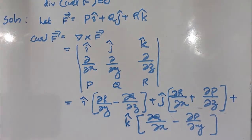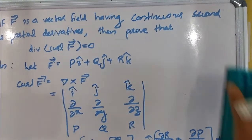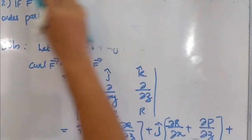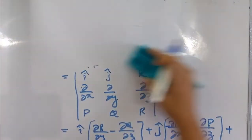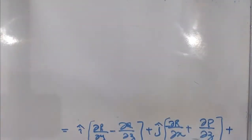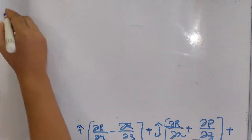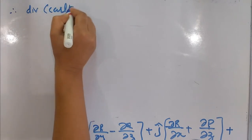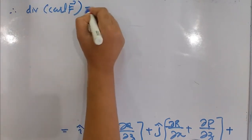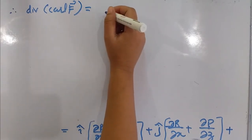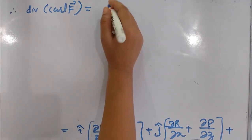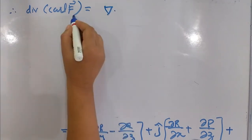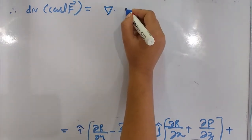Now we compute the divergence of curl of F. Divergence of curl of F is equal to del dot (del cross F).